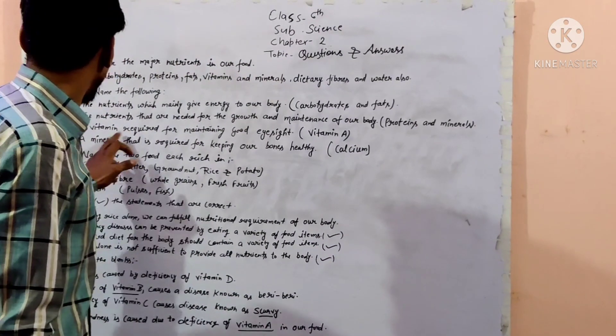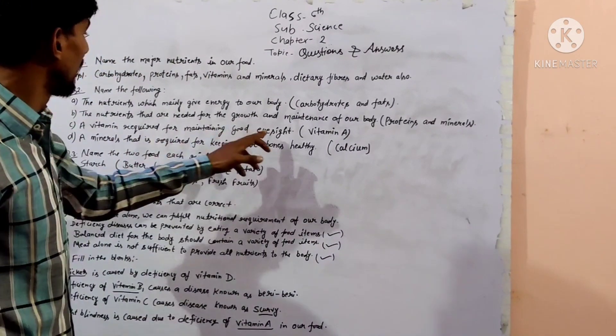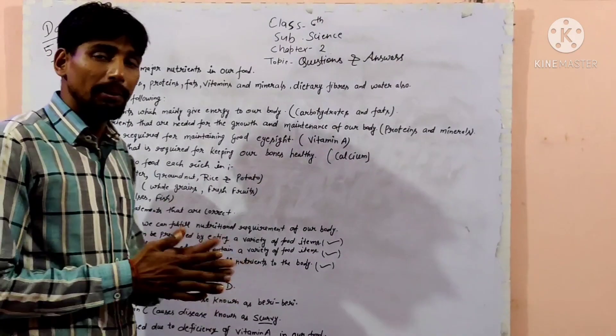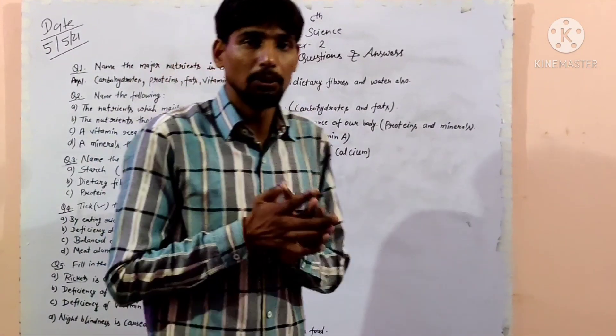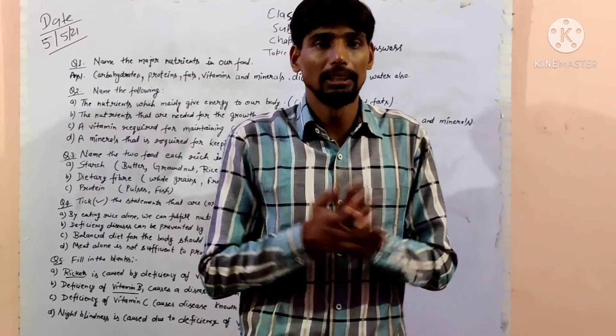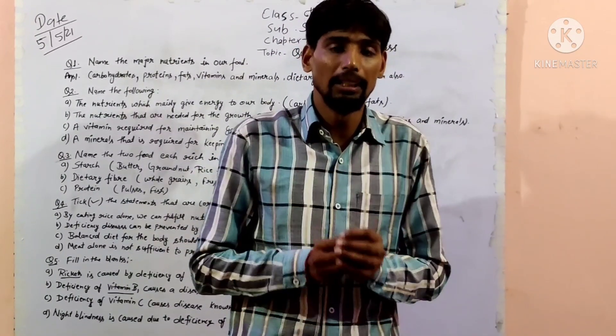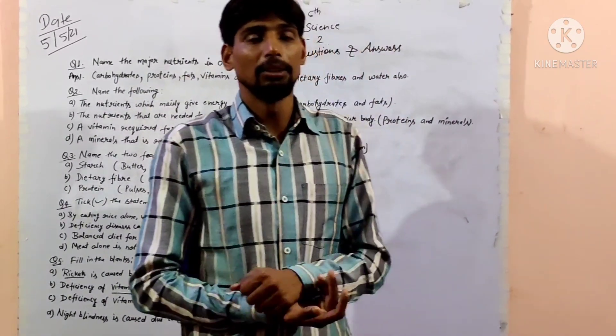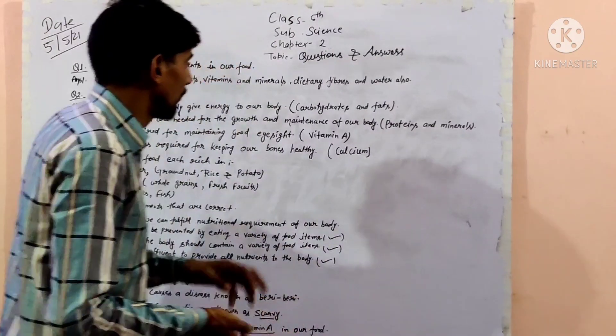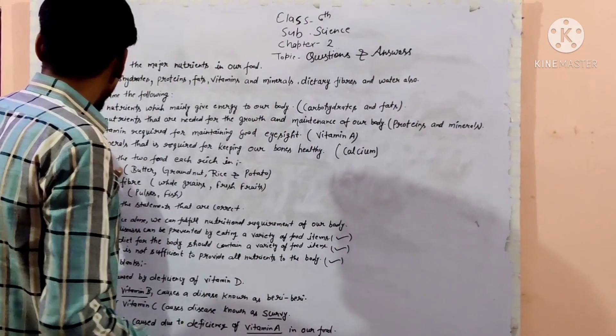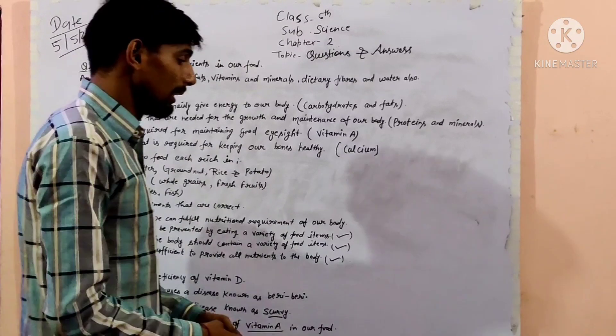Then we have to write down the vitamin required for maintaining good eyesight. That is the vitamin A that is required for keeping our bones healthy.